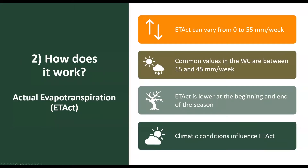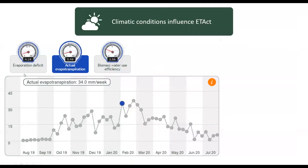Actual evapotranspiration can vary between no or little evapotranspiration all the way up to 55 millimetres per week. Common values for deciduous fruits grown in the Western Cape are between 15 and 45 millimetres per week. It is normally lower at the beginning and end of the season as crop development is respectively just initiated or over its peak. Climatic conditions also influence the actual evapotranspiration as we can see in this typical curve. Solar energy is more abundant in mid-summer than in spring and fall, causing more evapotranspiration of water. However, there are also small variations from week to week, most likely caused by variation in meteorological conditions.